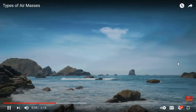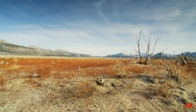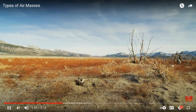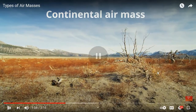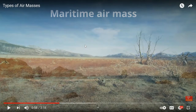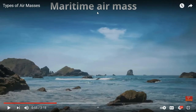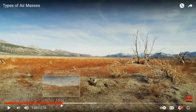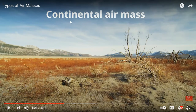Air masses that form over the ocean are called maritime. Air masses that form over land and continents are dry, and they are called continental air masses. Maritime forms over water. Continental — you think of a continent, a piece of land — and it is dry. Go ahead and write these down and then press play once you've completed that.